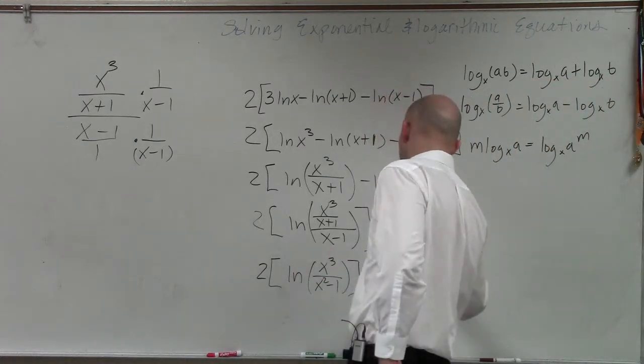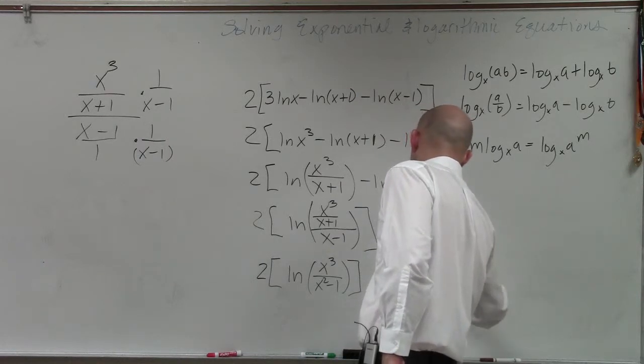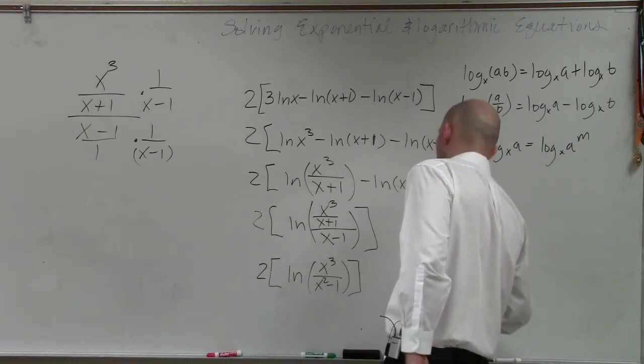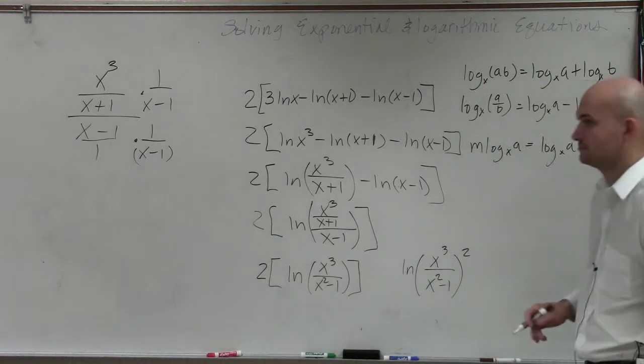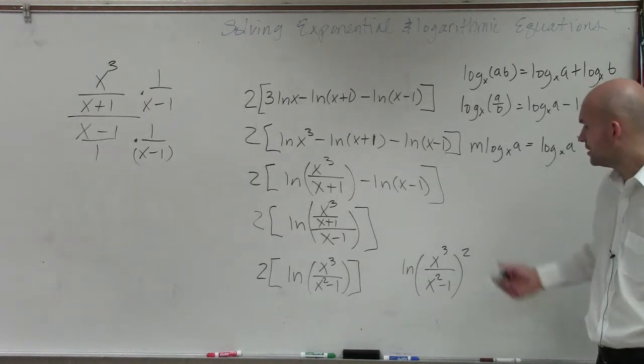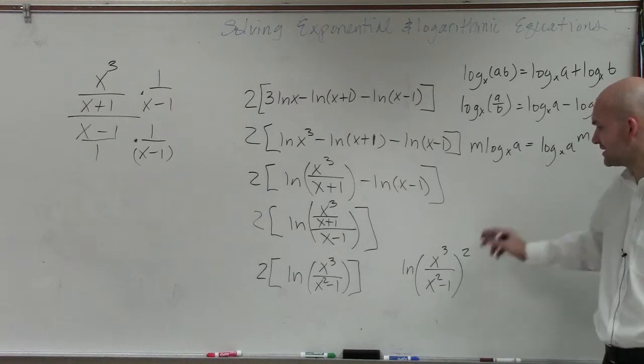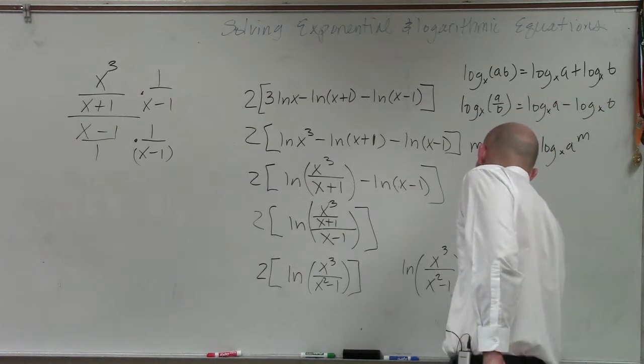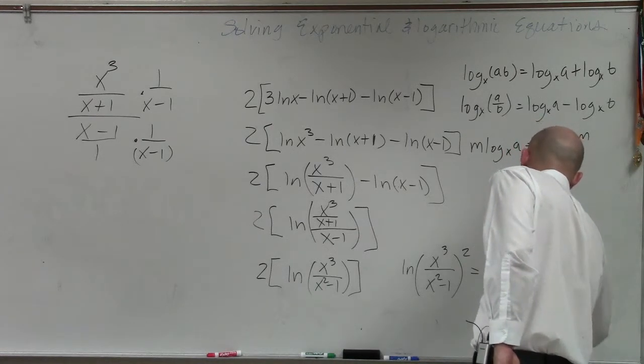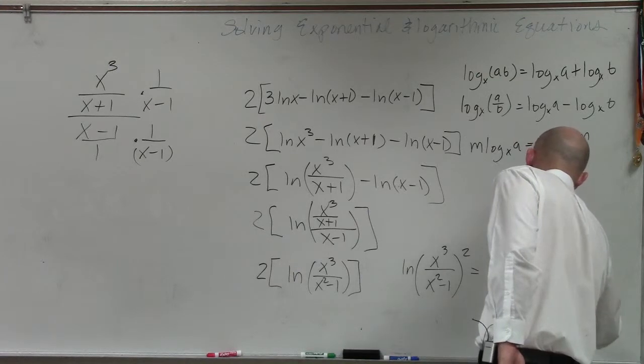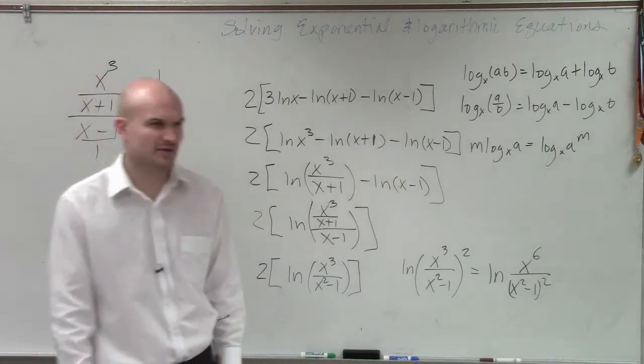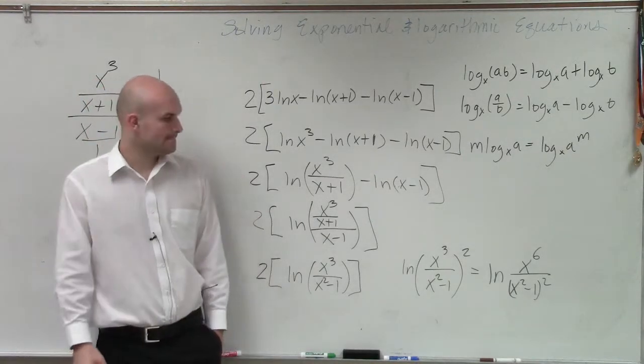Because x plus 1 times x minus 1 is the difference of two squares. Then I bring the two up. So I have ln of x cubed over x squared minus 1 raised to the second power. All right? And then you could obviously simplify that a little bit further. You could say that's going to be x to the sixth. And then this would be, we're not going to FOIL that out, but you could do ln of x to the sixth power over x squared minus 1 squared. But I'm not going to FOIL that out. OK?